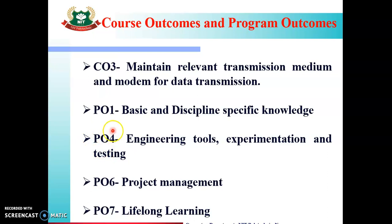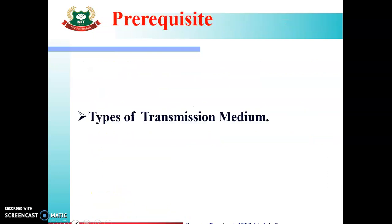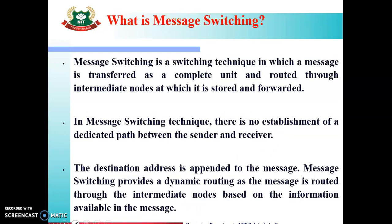Program Outcomes those are going to map are PO1, 4, 6 and 7. Prerequisite to this topic is, you should know all the types of transmission medium, that is Guided Transmission Medium and Unguided Transmission Medium.